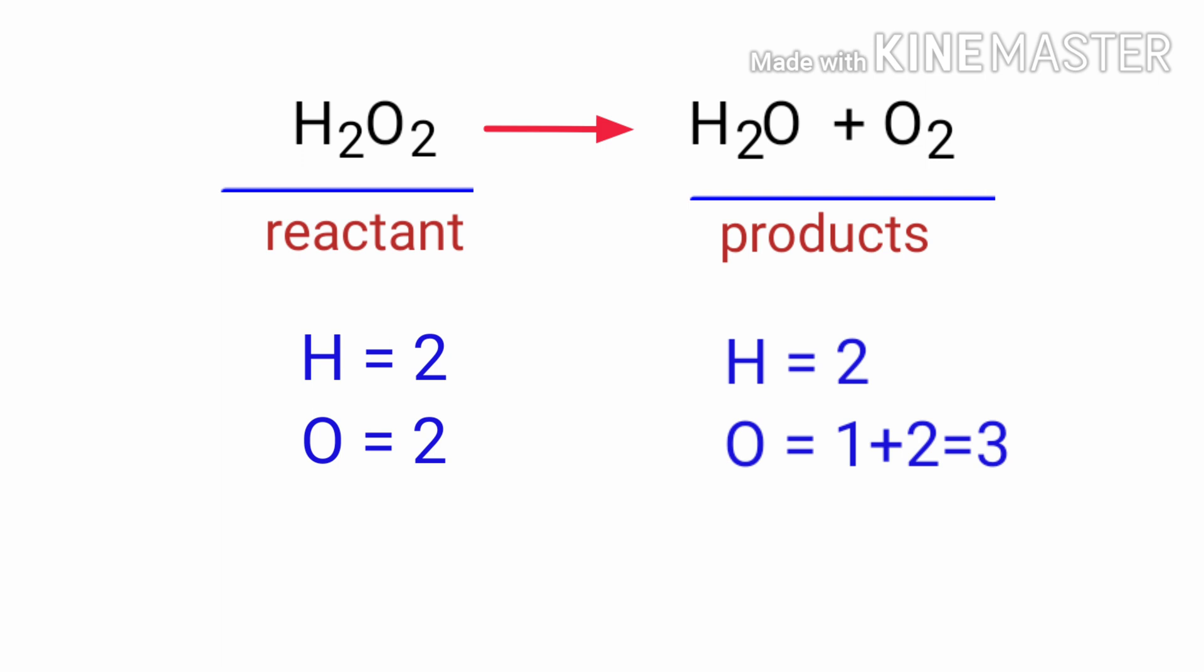The number of atoms are not balanced on both sides. To balance the chemical equation we need to make use of coefficients. A coefficient is a number that we place in front of a chemical formula.